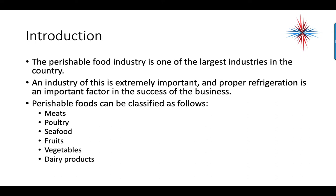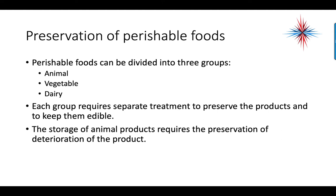Perishable foods can be classified as follows: meat, poultry, seafood, fruits, vegetables, and dairy products. Perishable foods can be divided into three groups: animal, vegetable, and dairy. Each group requires separate treatment to preserve the products and keep them edible.